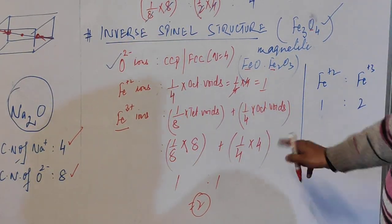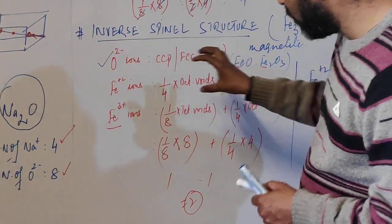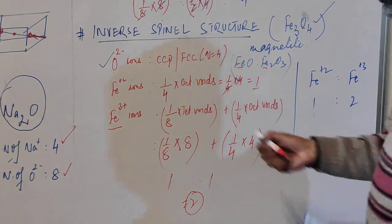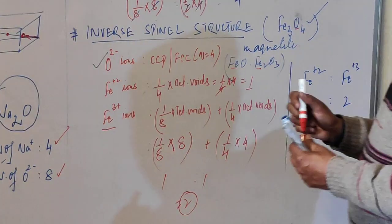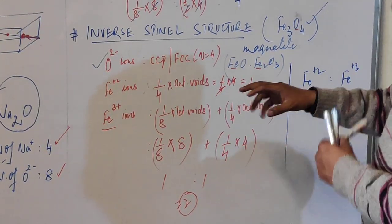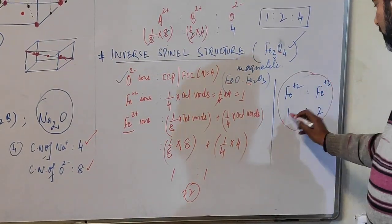So this is the normal spinel structure. Students, we observe that this type of structure is obtained when two-thirds of ferrous ions from the octahedral voids are replaced by ferric ions.